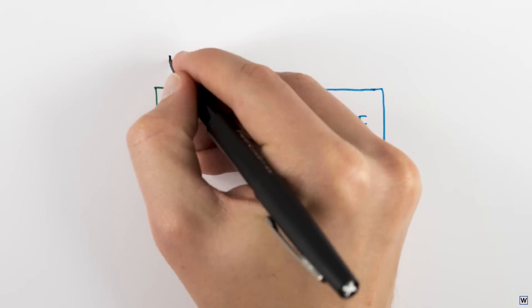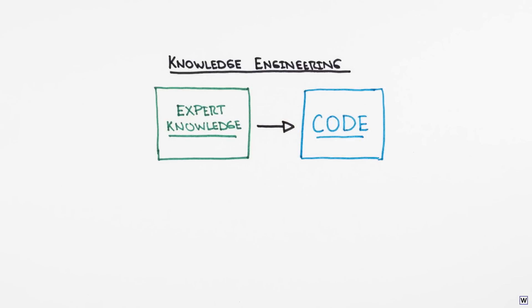This process, dubbed knowledge engineering, proved tedious, especially when DEC's own experts disagreed with one another over ideal configurations. But McDermott persisted.